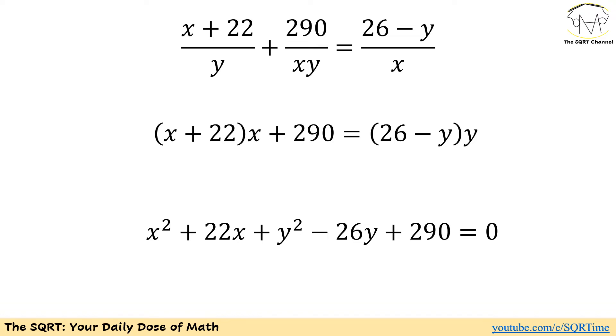For the first one we are going to have xy times (x + 22)/y, so we are going to have (x + 22) times x. For the second one we are going to have just 290.